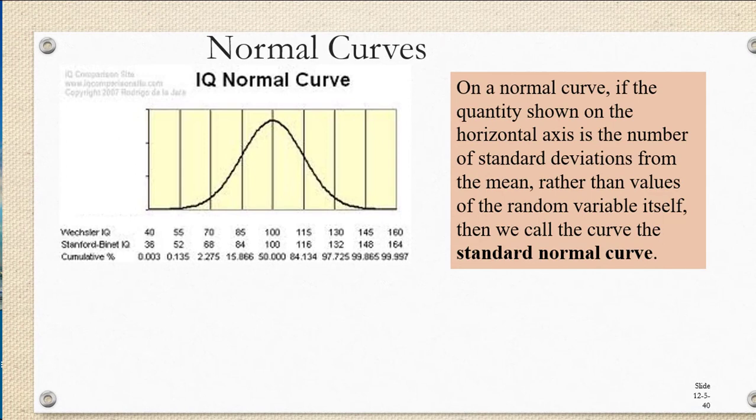On a normal curve, if the quantity shown on the horizontal axis is the number of standard deviations from the mean rather than the values of the random variable itself, we call the curve a standard normal curve.